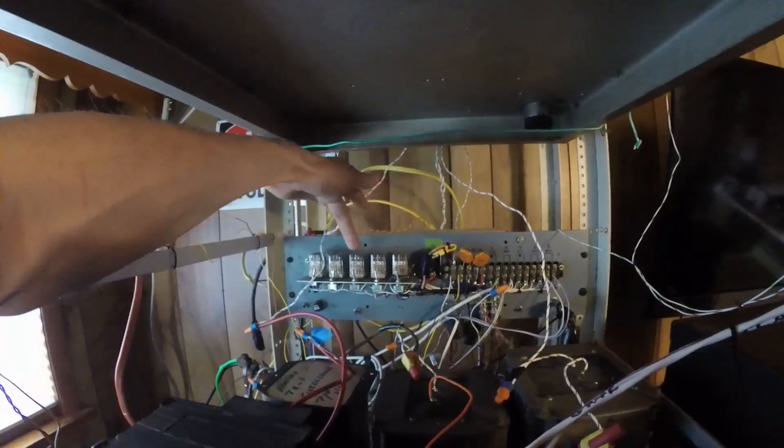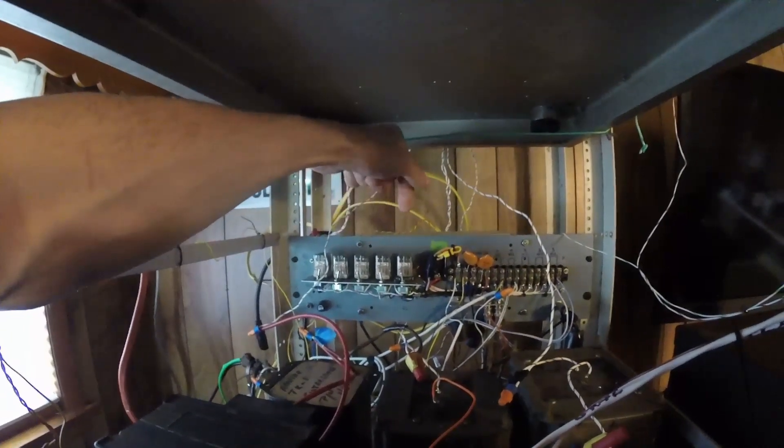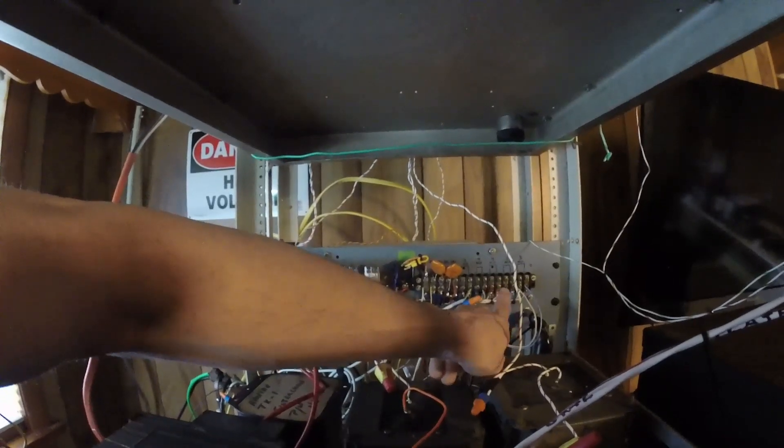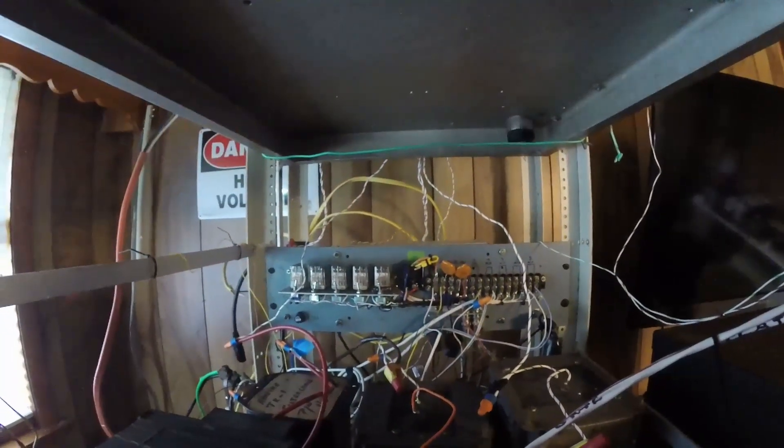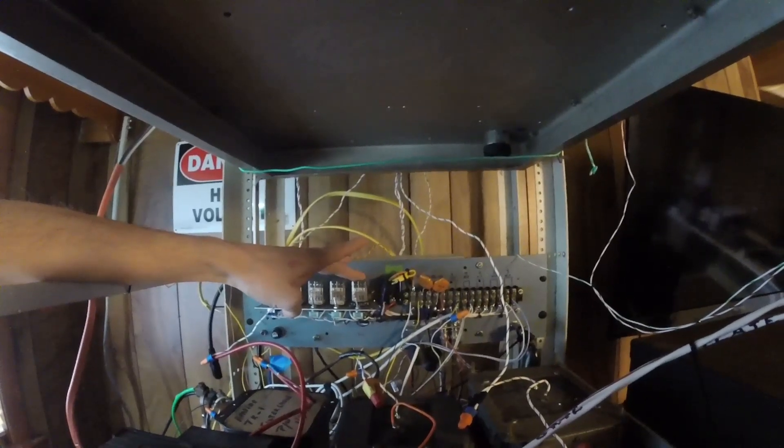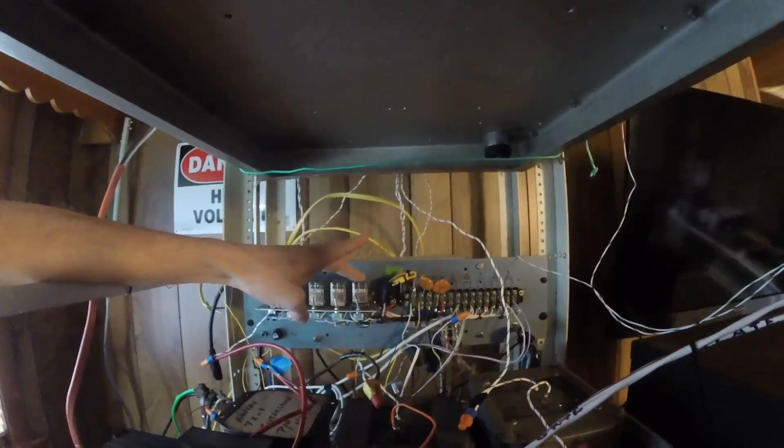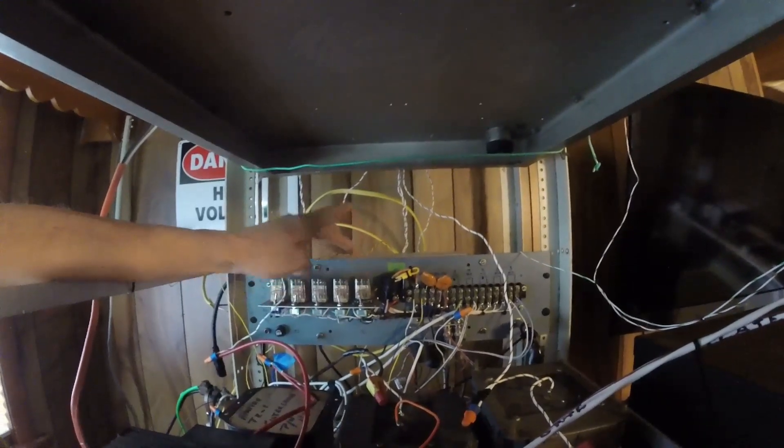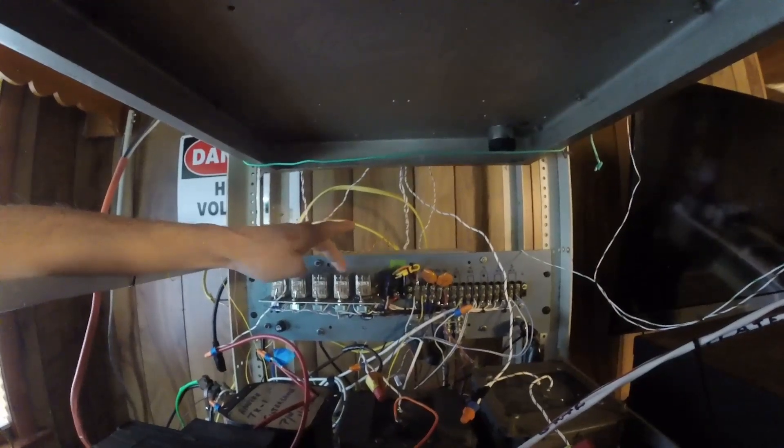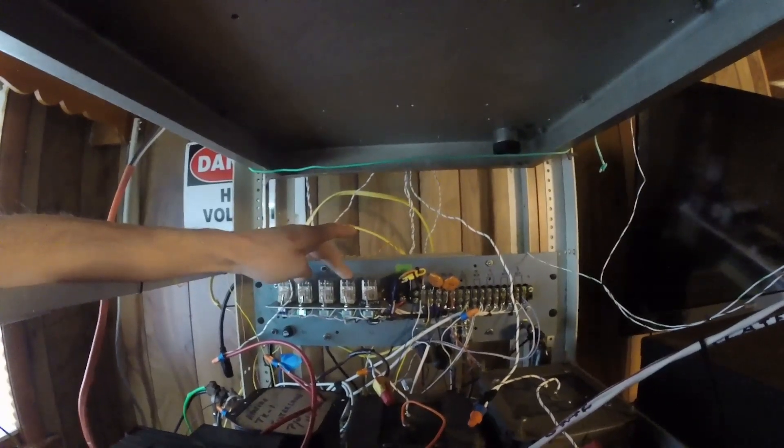This lets everything unkey and go away before it switches back to the receiver, just in case my foot slips off the pedal. It just prevents hot switching. So it has a slight time delay on it. There's some contacts here: 24 volts switched, 24 volts switched with delay. That's where my coax relay is hooked up.